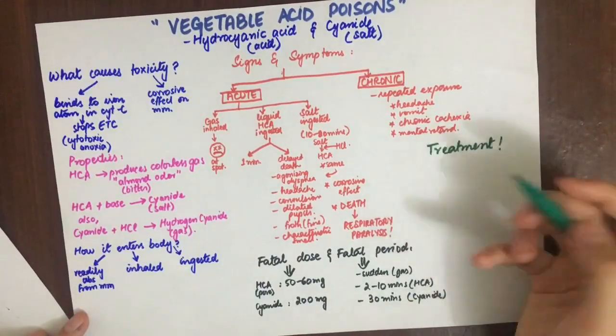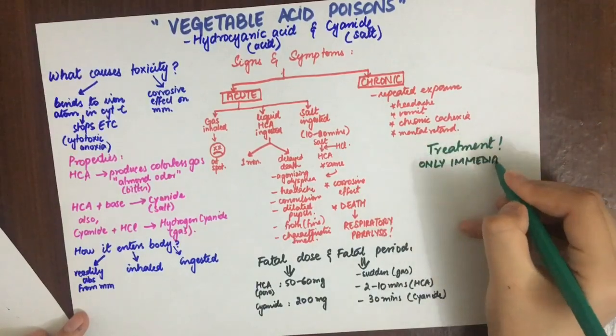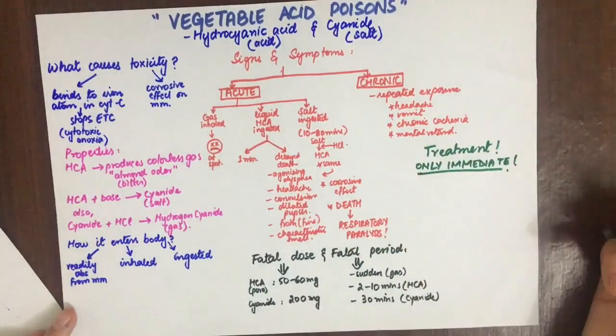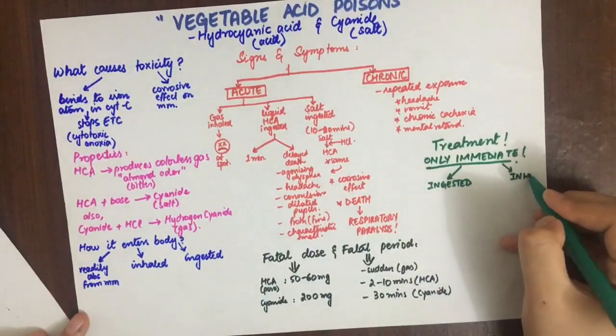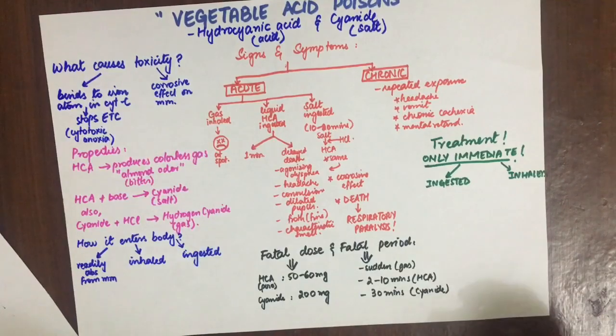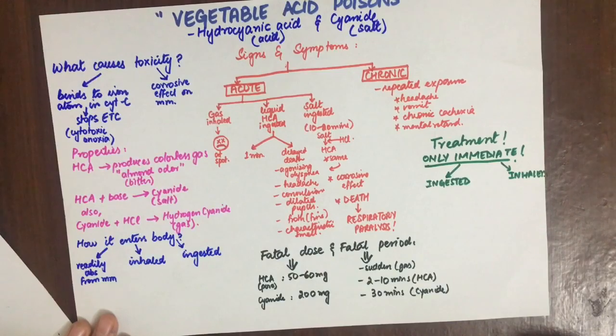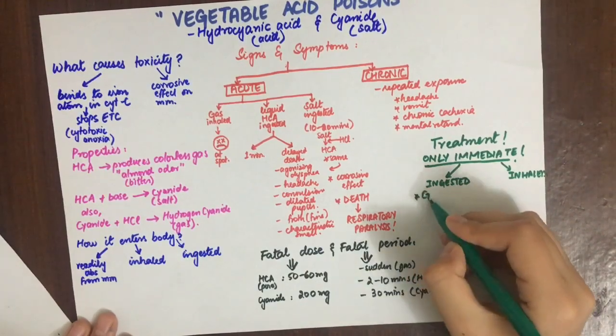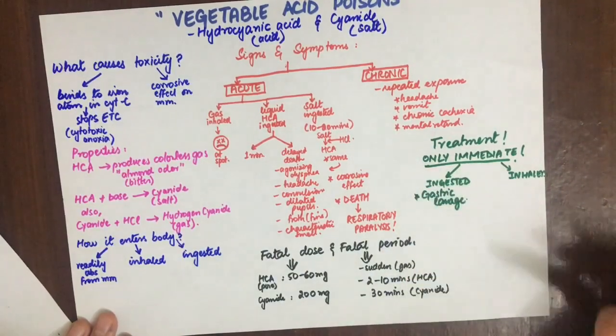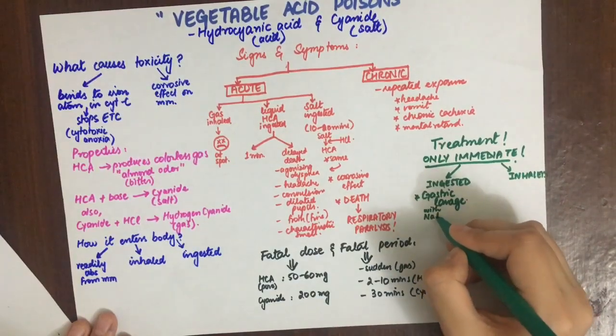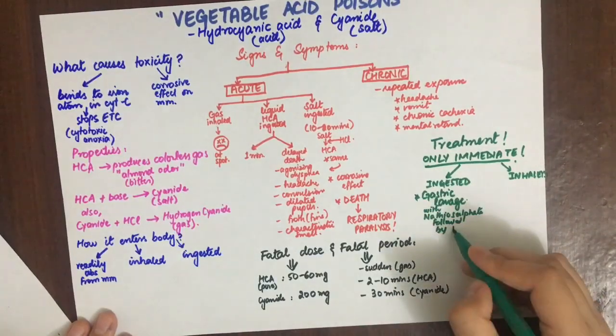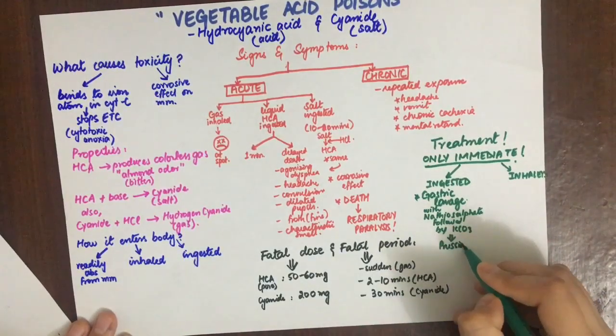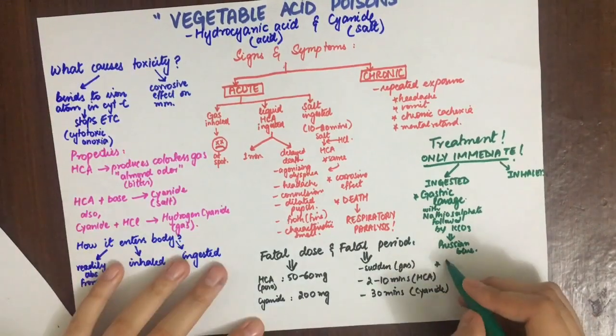Treatment of cyanide poisoning will only be effective if given immediately because the cyanide-cytochrome complex needs to be reversed. We do this by giving hydroxycobalamin or methylene blue to convert hemoglobin into methemoglobin, so that cyanide can react with methemoglobin and convert into cyanomethemoglobin, which is non-toxic. Gastric lavage is done with sodium thiosulfate or iron, which is followed by potassium carbonate to form Prussian blue, which is an inert substance. Emetics can also be given if gastric lavage is not readily available.